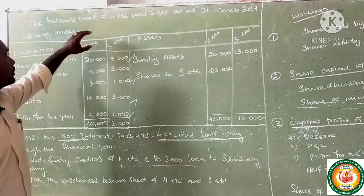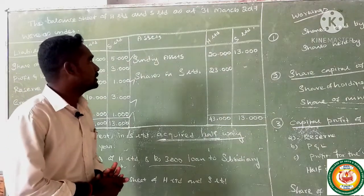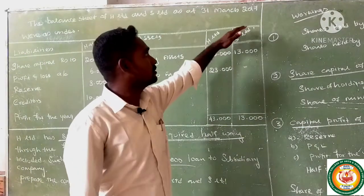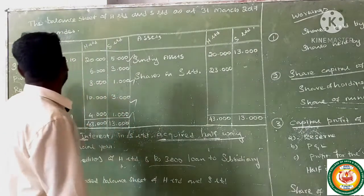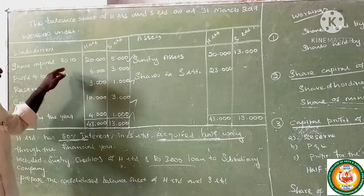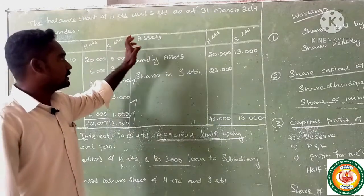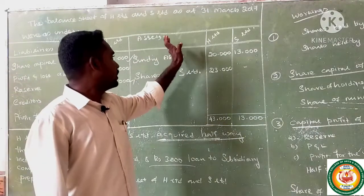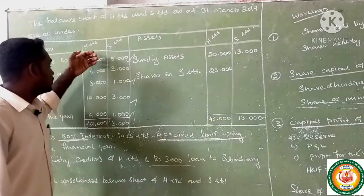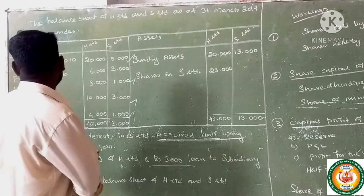The balance sheet of HL and S Limited as at 31st March 2017. HL is the holding company and S Limited is the subsidiary company.